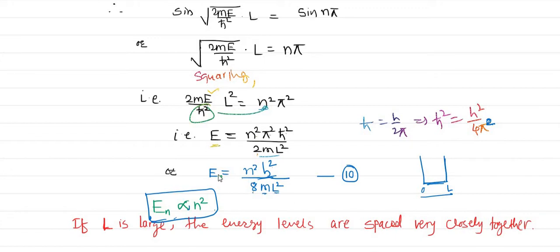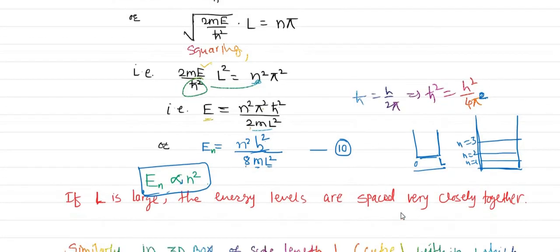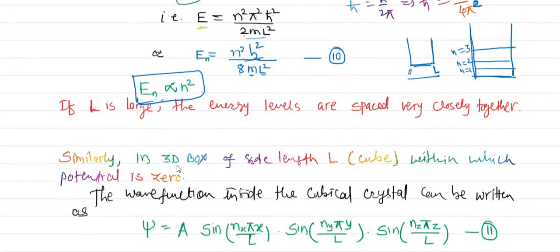If the value of L is larger, then energy will be smaller because L is in the denominator — as L increases, energy decreases, and the energy levels will be very close to each other. For a sufficiently large L the energy values will be close to each other. Now analogously we can write for the three-dimensional box, since one-dimensional is only for understanding and calculation purposes.